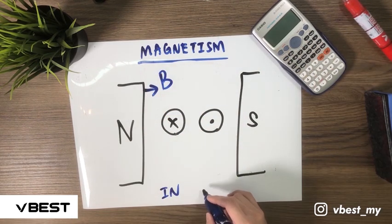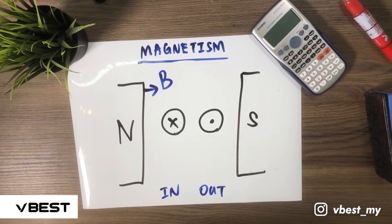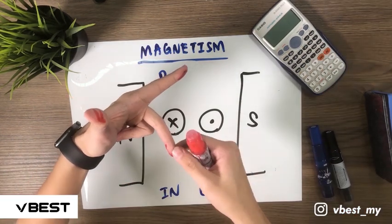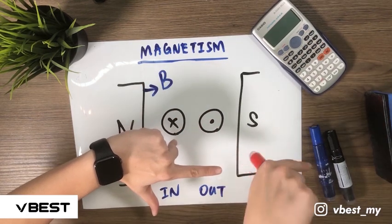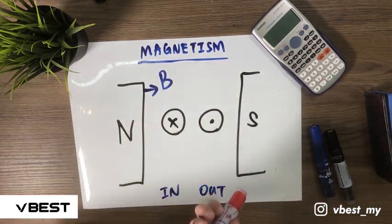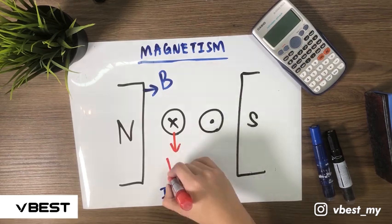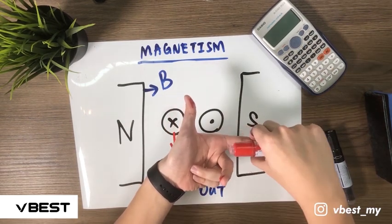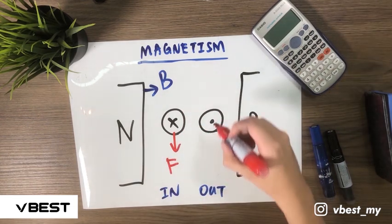On the left will be in, on the right will be out. So by using Fleming's left hand rule, I is into the page, index finger pointing to the south, so force is going down. Then when the current is out, magnetic field is to south, force will go up.